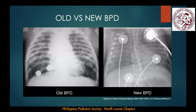More and more, PIE changes — these cystic structures — are being seen in very extremely premature babies as early as the second day of life. These cystic changes were not seen that early in old BPD, but since we're now resuscitating infants who are even 22 weeks, we see a lot of these PIE changes on x-ray as early as the second day of life.